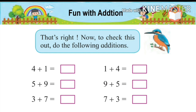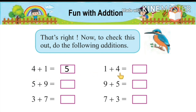That's right! Now to check this out, do the following addition. We do the same: four plus one — what will the answer be? Very good, it will become five. Here we have interchanged the digits: 4 plus 1, and here we have 1 plus 4. The addition will be the same; the answer will be 5.